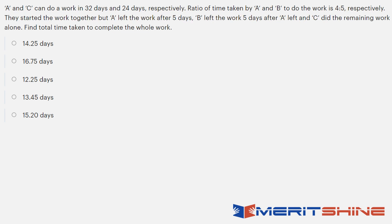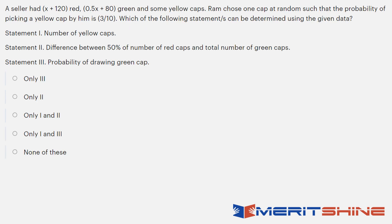The next question: A and C can do work in given days, ratio of A to B is given, they start work together. This is a standard time and work question — can be done in about one and a half minutes. However, with short time available, you can move ahead to capitalize on easier questions. It is your call based on remaining time.